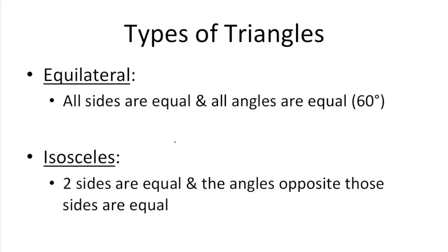Moving on to types of triangles. An equilateral triangle is a triangle with all equal sides, so A, A, A, all the same length, and all equal angles. And in this case, since there are three angles and they have to add up to 180, they're each 60 degrees.